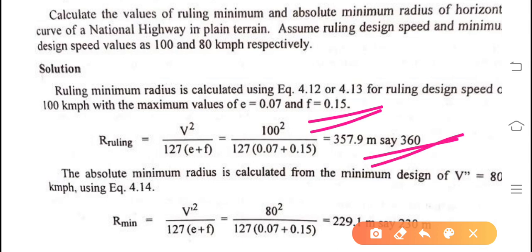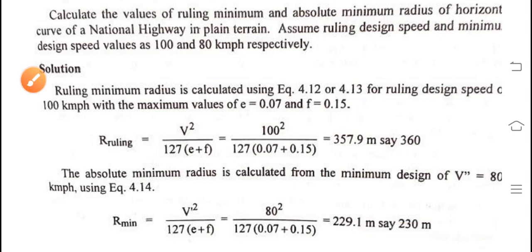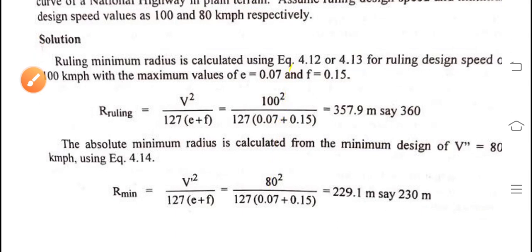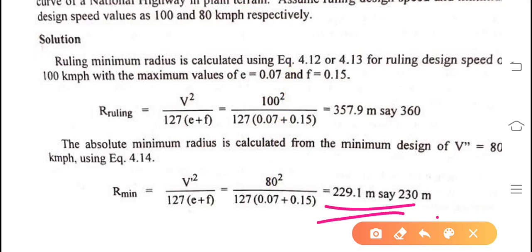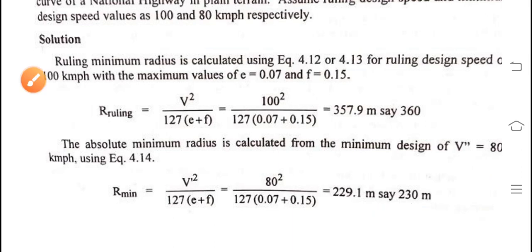Therefore, r_ruling = 357.9 meters, say 360 meters. For the absolute minimum radius, v is taken as 100 − 20 = 80 km/h, and you will get the answer 299.1 meters, approximately 300 meters. This is a simple 4-mark question that you can solve in four minutes in the exam.